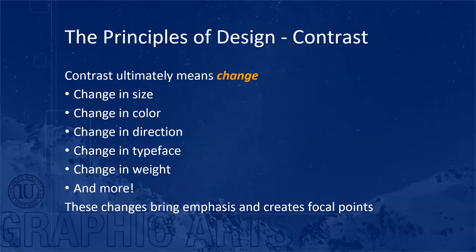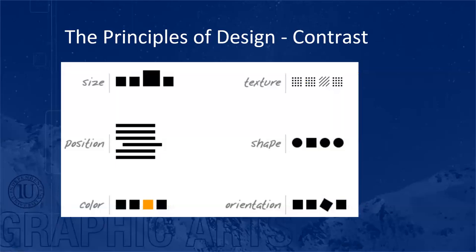Contrast — the C in CRAP — essentially means change. You have a change in size, color, direction, typeface, or weight. It brings emphasis, creates focal points that draw your eye, and creates interesting layouts. In this example, every other category has four images with one slightly different, so it contrasts visually to draw your eye in and create interest within the layout.